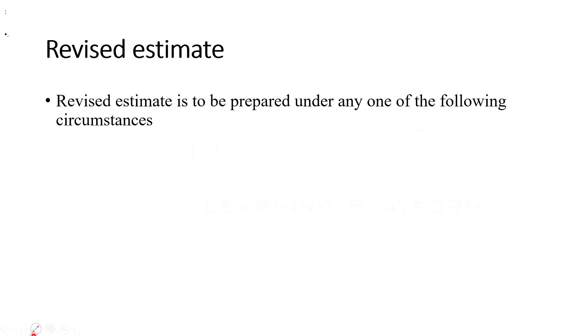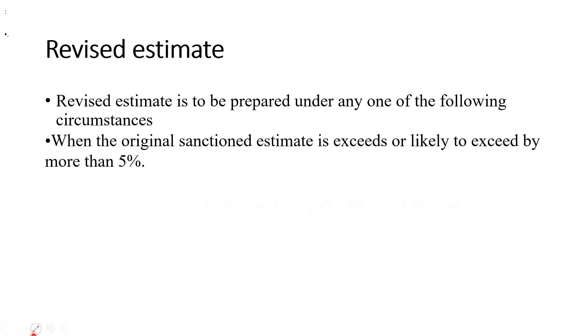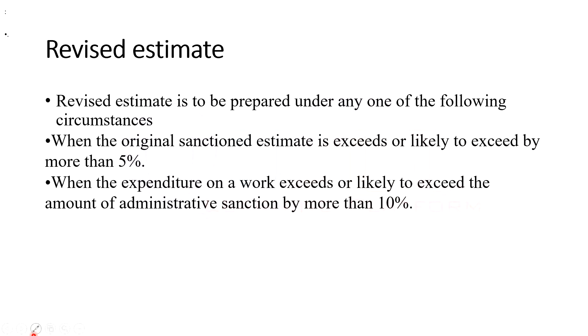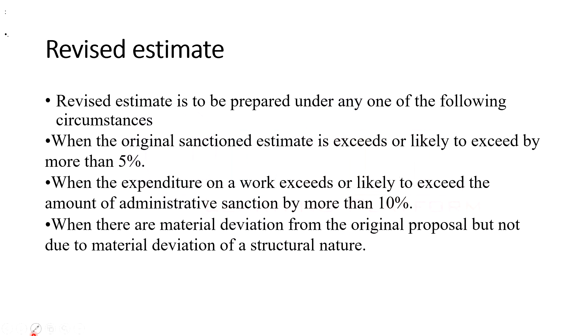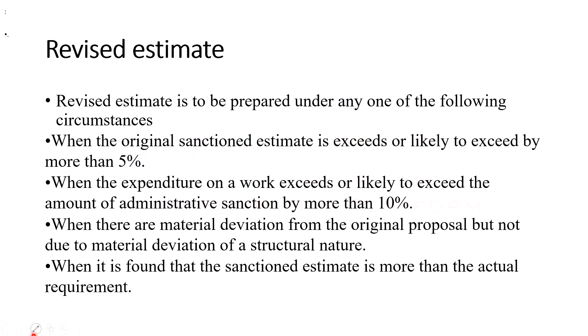A revised estimate is prepared under any of the following circumstances: when the original sanctioned estimate is exceeded or likely to be exceeded by more than five percent; when expenditure on the work exceeds the administrative sanction by more than ten percent; when there is a material deviation from the original proposal not of a structural nature; or when the sanctioned estimate is found to be more than the actual requirement.